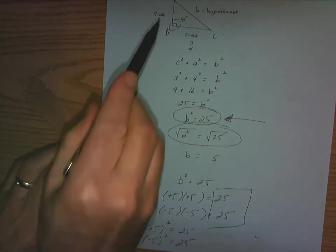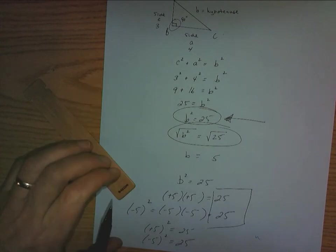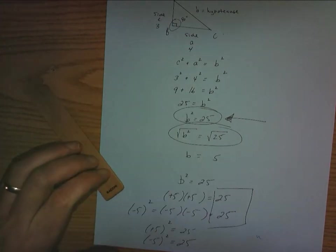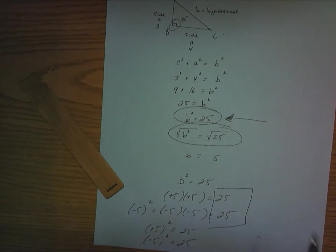Now, if I'm dealing with triangles, and this has to be a length, it doesn't make any sense to say that this would be negative 5 units long. There's no such thing as negative units in measurement. However, there is such a thing as an answer of negative 5 in mathematics.